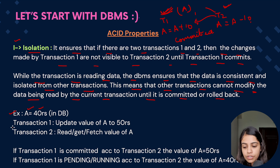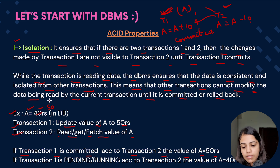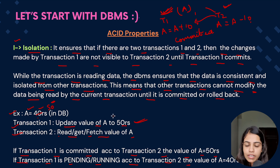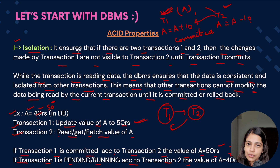Consider A has 40 rupees in the DB. Transaction T1 is updating A to 50 rupees; Transaction T2 is reading A. If T1 is committed, T2 will see the value as 50 rupees. But if T1 is in a pending or running state, T2 will still read A as 40 rupees because the write has not been completed. This data inconsistency is why two transactions modifying the same data must be isolated — one must complete before the other proceeds.